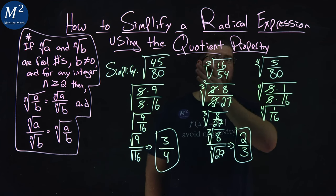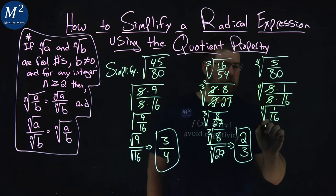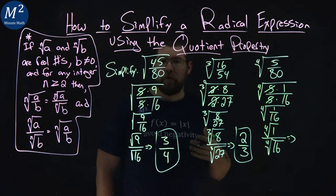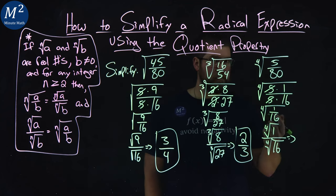From here, 5s cancel and we have the fourth root of 1 over 16. We can still apply the quotient property here. We have the fourth root of 1 and the fourth root of 16.